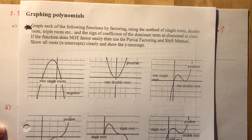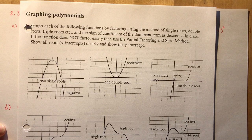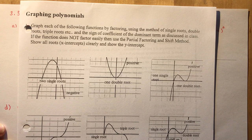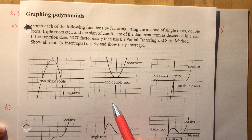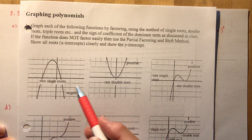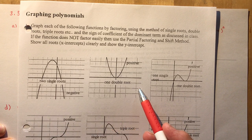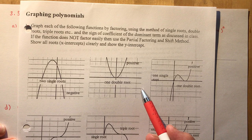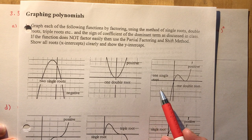First we need to understand what we're looking for when we go to graph polynomials. In the previous lesson we talked about positive and negative leading coefficients. Now we're going to talk about the types of roots. In some textbooks they call it the order of the root — you've probably heard it as double root, single root, or triple root. When the textbook says 'of order 2,' they just mean a double root; 'of order 3' means a triple root.